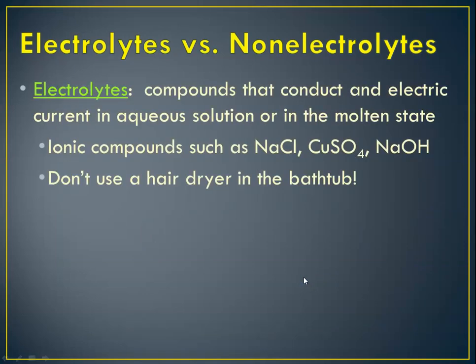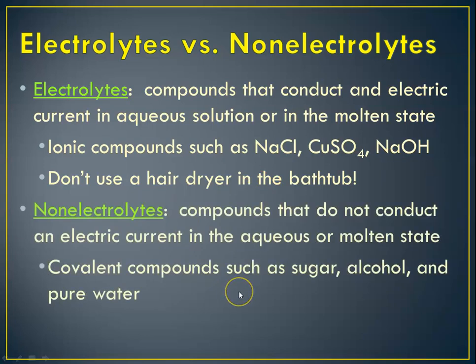So now we're going to talk about electrolytes versus non-electrolytes. Electrolytes are compounds that can conduct electric current in water solution or in the molten state. Ionic compounds such as sodium chloride, copper 2-sulfate, and sodium hydroxide are all examples. That's why you don't use a hairdryer in the bathtub. Non-electrolytes are compounds that do not conduct an electric current in the aqueous or molten state. Covalent compounds such as sugar, alcohol, and pure water—all of those things are covalently bonded. Because they're covalently bonded, they don't disperse in water, which ionic compounds, because they're positive and negative ions, do.